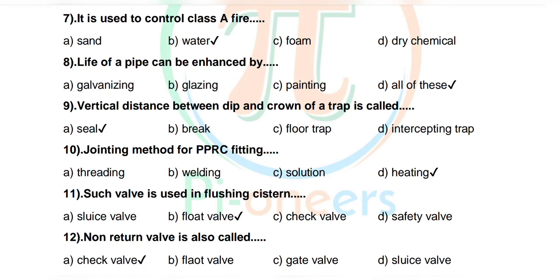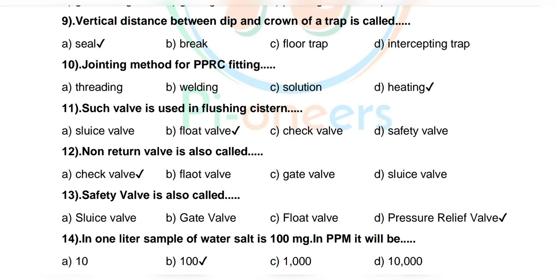Question 12: Non-return valve is also called — options: check valve, float valve, gate valve, sluice valve. Correct answer: check valve. Question 13: Safety valve is also called — options: sluice valve, gate valve, float valve, pressure relief valve. Correct answer: pressure sleeve valve.